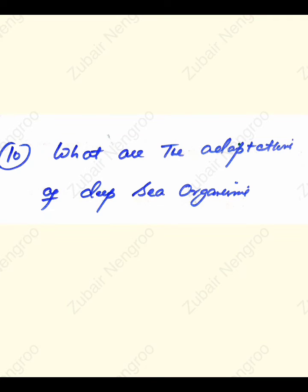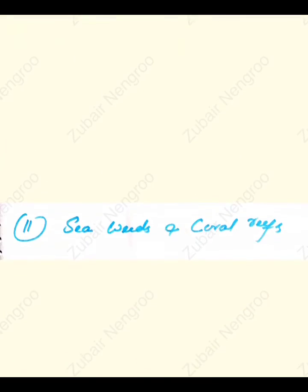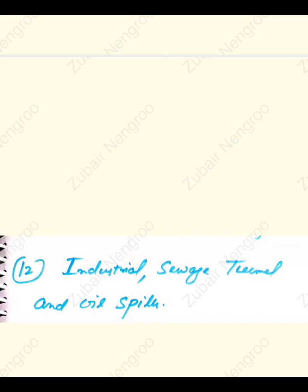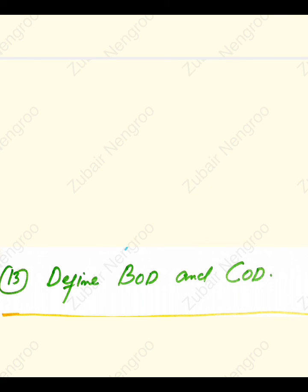Question number ten: what are the adaptations of deep sea organisms? Question number eleven: seaweeds and coral reefs. Question number twelve: industrial, sewage, thermal, and oil pollutants. And lastly: define biological oxygen demand (BOD) and COD. This was all about the guest paper of Zoology for BG fifth semester students. Thank you for your cooperation.